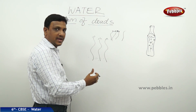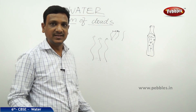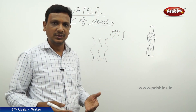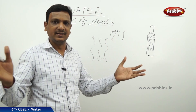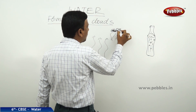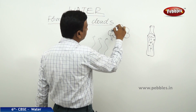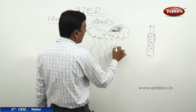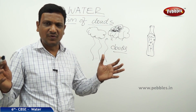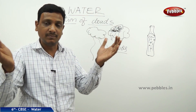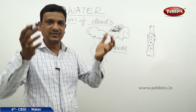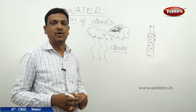These tiny droplets are not heavy enough to fall down, so they get stuck up there and keep collecting until they become heavy. Once they aggregate — many tiny dots joining to become bigger and heavier droplets — they can no longer stay at that height. Due to gravity and their heaviness, they fall down in the form of rain. So clouds are formed from tiny droplets of water, and once they become heavy enough, they fall as rainfall.